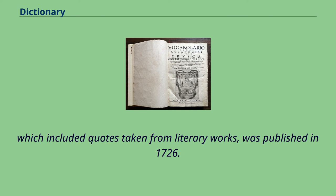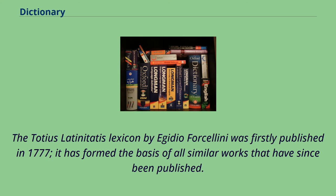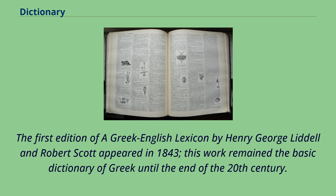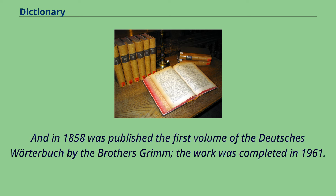The Totius Latinitatis Lexicon by Egidio Forcellini was first published in 1777; it has formed the basis of all similar works that have since been published. The first edition of A Greek-English Lexicon by Henry George Liddell and Robert Scott appeared in 1843; this work remained the basic dictionary of Greek until the end of the 20th century. In 1858 was published the first volume of the Deutsches Wörterbuch by the Brothers Grimm; the work was completed in 1961.